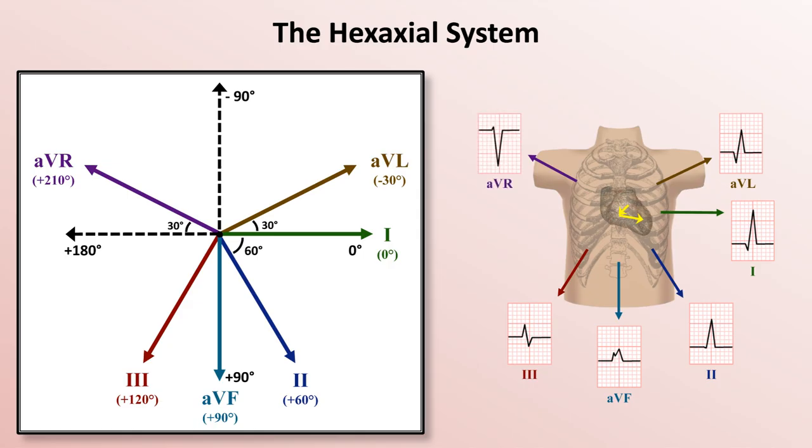The second depolarization vector is in a nearly completely opposite direction, so that second deflection on the EKG is negative and very prominent.